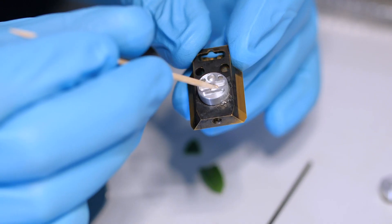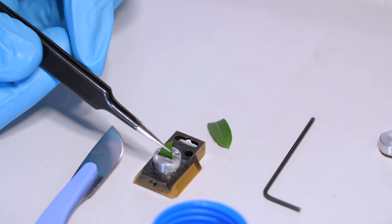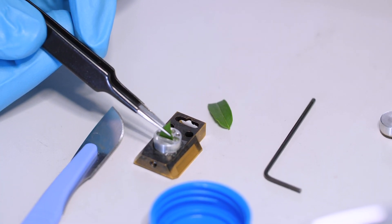He then puts some cryo glue into the shuttle and then takes his cut plant specimen and puts it into the glue.